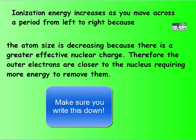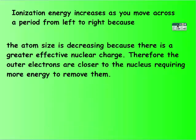Ionization energy increases as you go to the right because atom size is decreasing due to a greater effective nuclear charge. Therefore, the outer electrons are closer to the nucleus, requiring more energy to remove them.